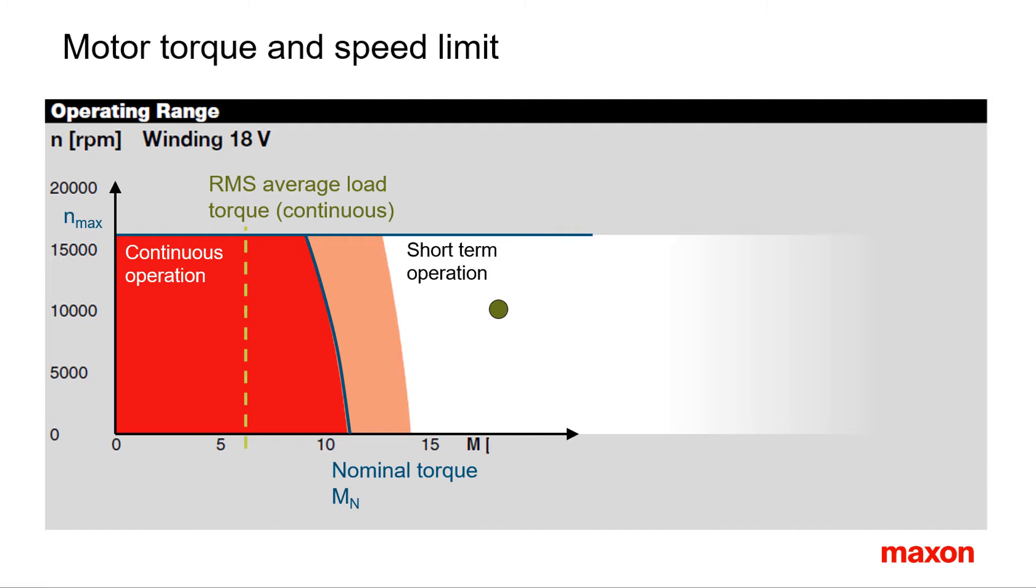Hence, we need a motor with the nominal torque larger than the RMS average load torque. Short load peaks, as during acceleration, may be located in the short-term operating range.